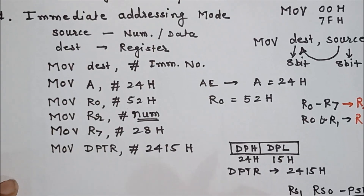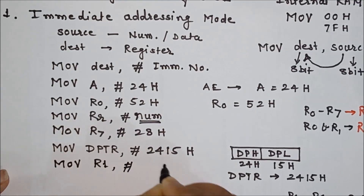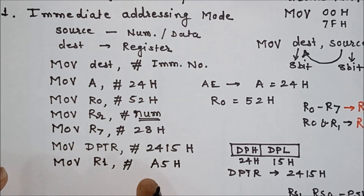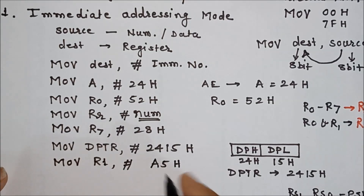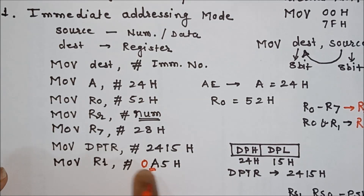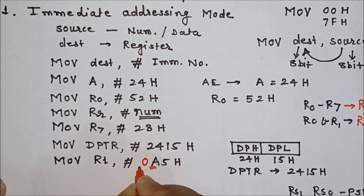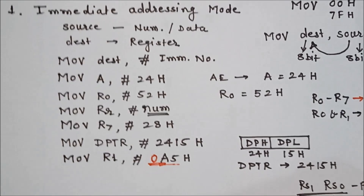If the data value starts with a character — for example, suppose I want to store A5H in register R1 — since A5H starts with a character, you must write it starting with 0, like 0A5H. This ensures the microcontroller understands it is data and not an instruction or variable. So whenever data starts with a character, insert a leading 0. This completes immediate addressing mode.